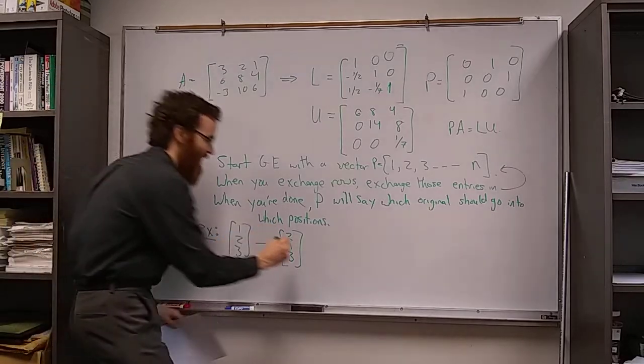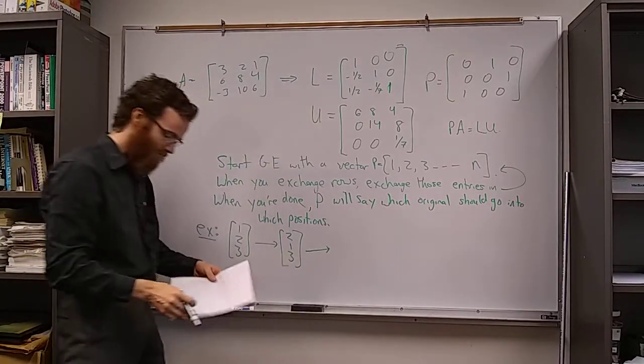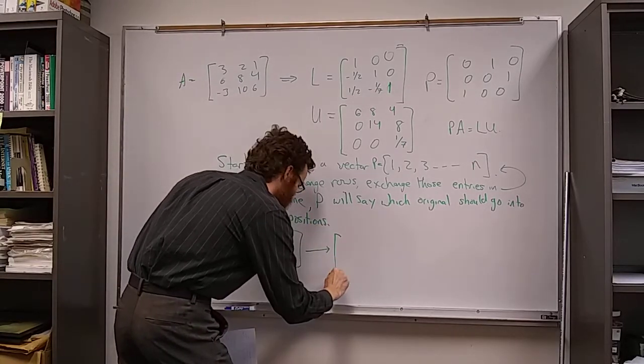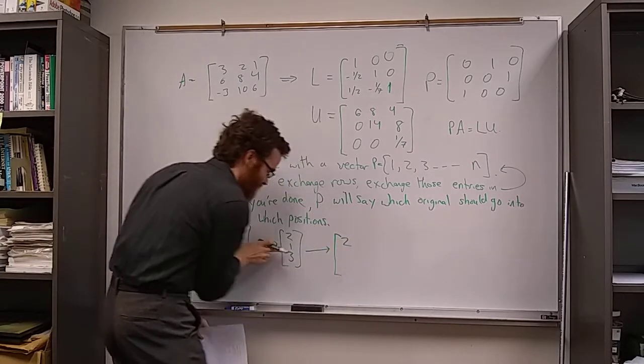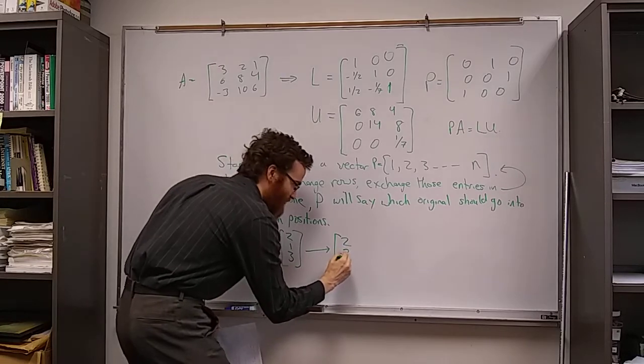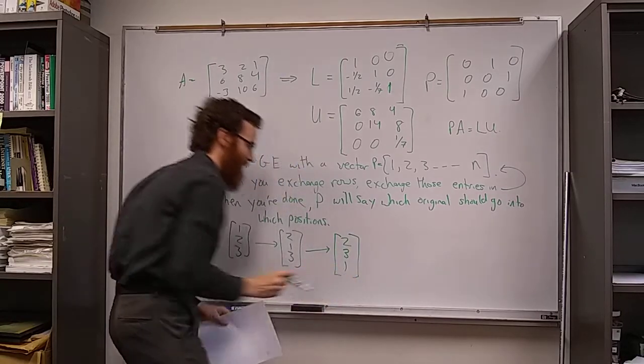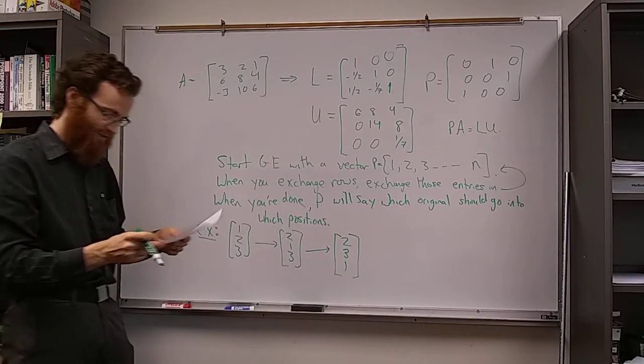Then we switch the second and the third row, so we switch these numbers and we get 2, 3, 1. And so this...